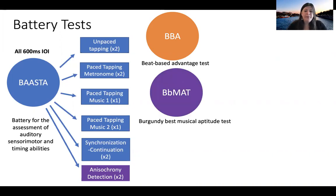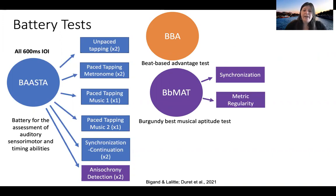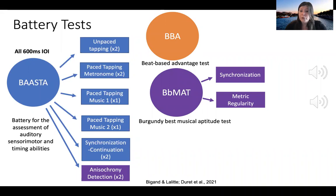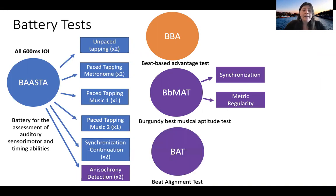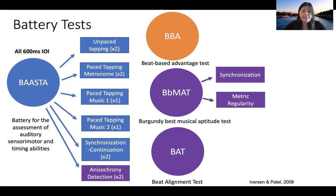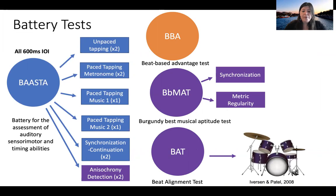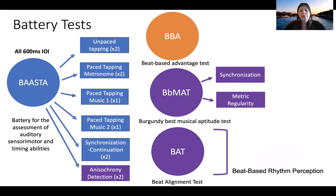We also ran two tests from the Burgundy BMAT musical aptitude test: a synchronization task and a metric regularity task. The synchronization task involved judging if a complex rhythm was in sync with itself or not — a nice test with a good spread of scores. The metric regularity task, which just required judging if a rhythm was regular or irregular, was not used in the final analysis. We also used the Beat Alignment Test (BAT) from Iversen and Patel, and an adaptation from the BASTA, where participants judge if a tone superimposed on a rhythm is aligned or not — also a beat-based rhythm perception task.